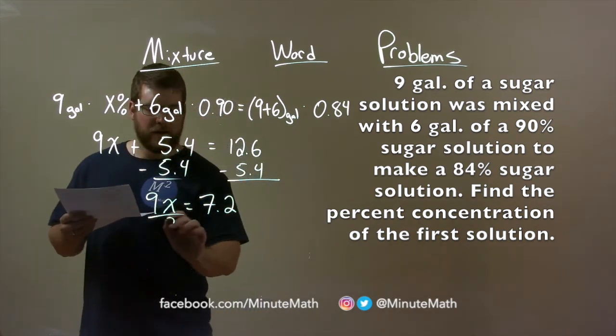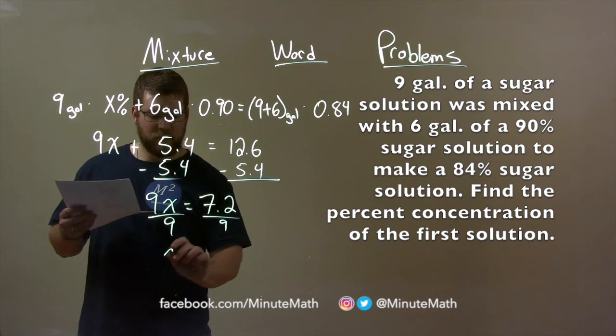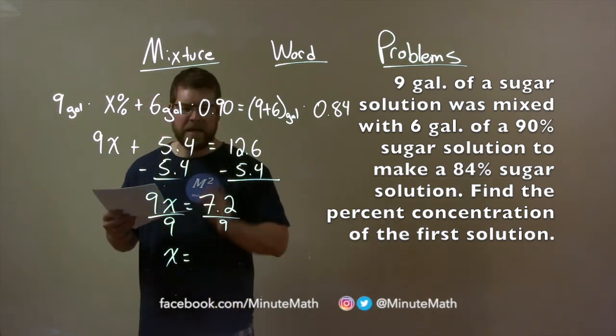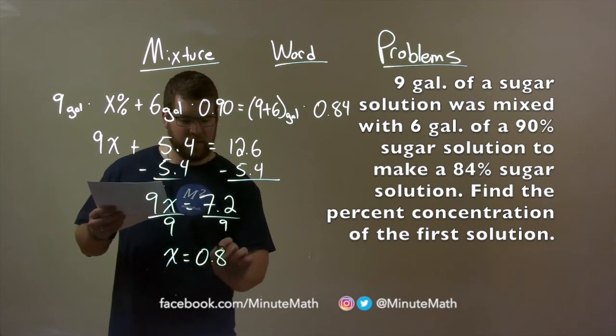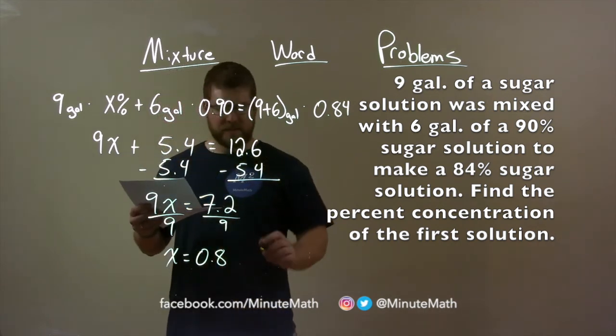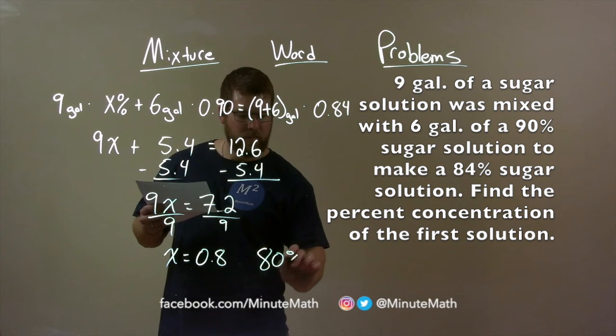Divide both sides by 9, and we're left with x by itself. 7.2 divided by 9 is 0.8, which is, as a percent, 80%.